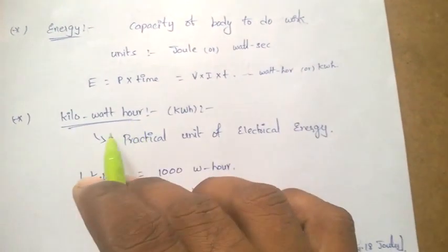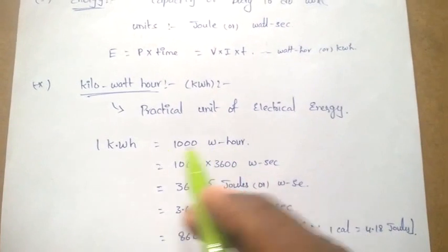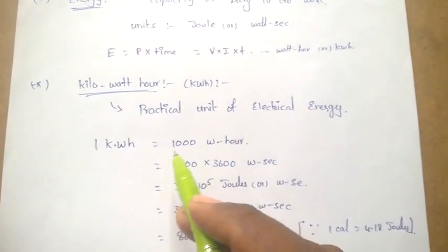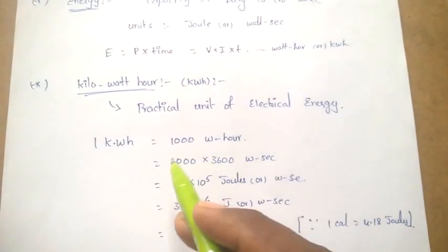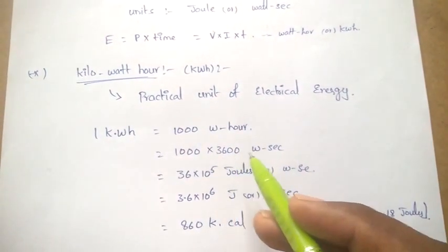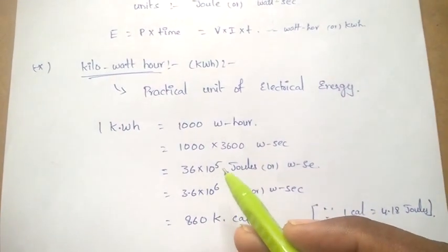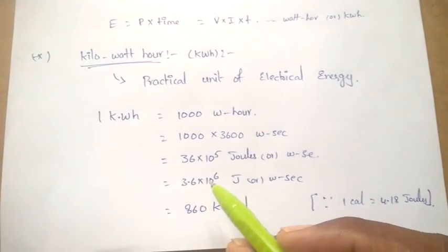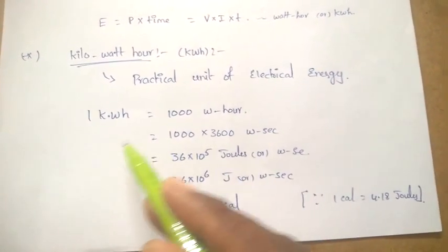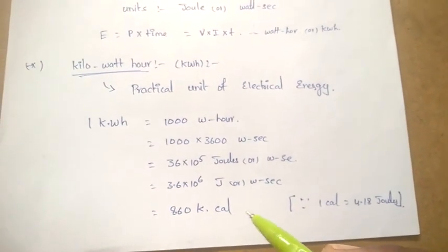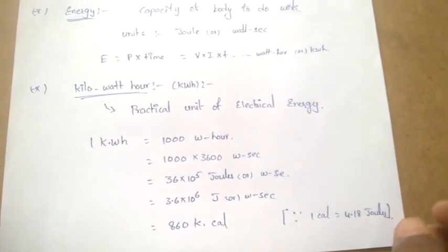One kilowatt-hour equal to 1000 watt-hours. When kilowatt is converted to watts and hours to seconds, that is 1000 into 3600 watt-seconds, equal to 3.6 into 10 power 6 watt-seconds. When converted into kilocalories, 1 kilowatt-hour equal to 860 kilocalories. This is also one of the important bits.